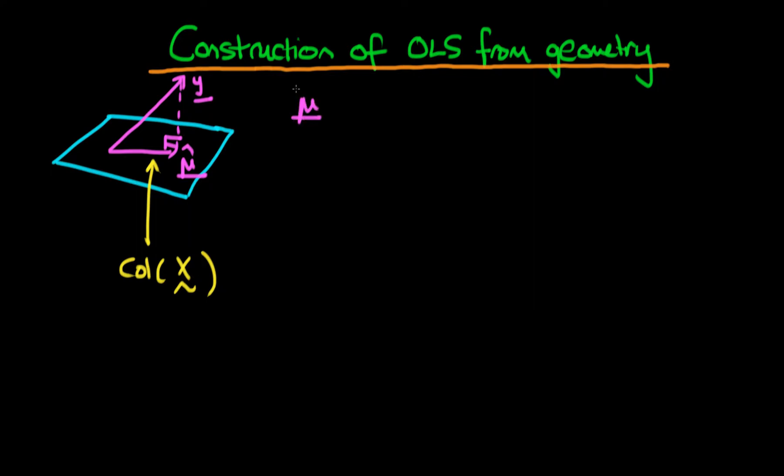Because of this, mu hat satisfies the following relationship: mu hat is the particular value of mu, constrained to lie within the column space of X, which minimizes the Euclidean distance ||y - mu||^2.